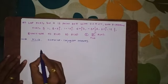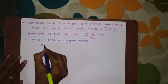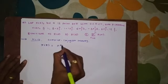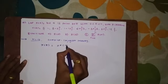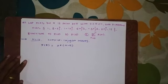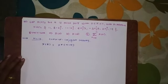By this complex conjugate property, we can write X of K is equal to X complex conjugate of N minus K. This is an important property of the discrete Fourier transform.